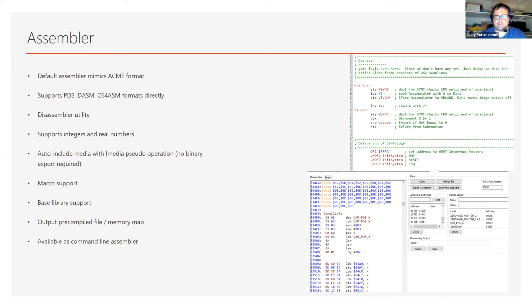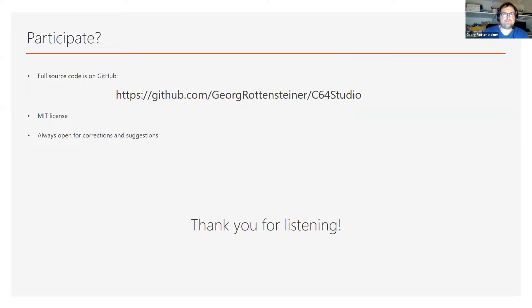There's also base library support: a list of assembler files in a special path that can be included much like a regular source include but from a base path. It's useful for constants for the C64 kernel, VIC, SID — so you don't have to manually locate those files. Basic stuff like outputting a pre-compiled file is also there, more useful for me when my assembler messes up and I need to find out why. You can also show a memory map of the compiled file. And just for fun, the assembler is also available as a pure command-line utility.